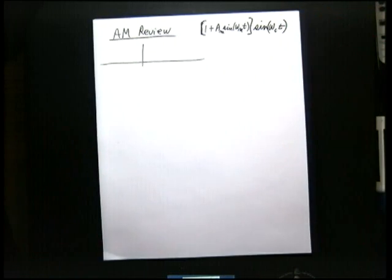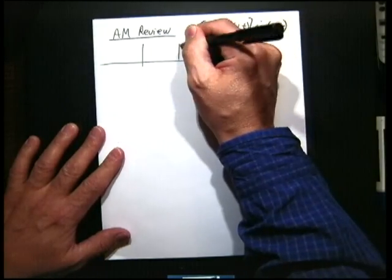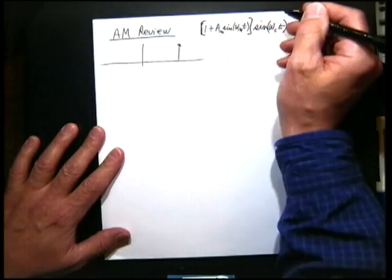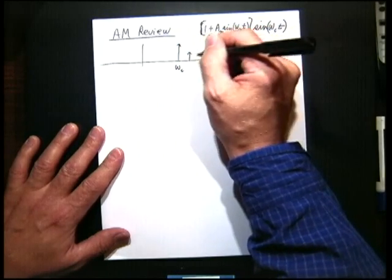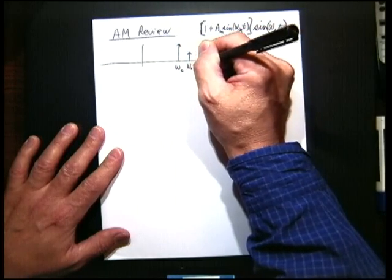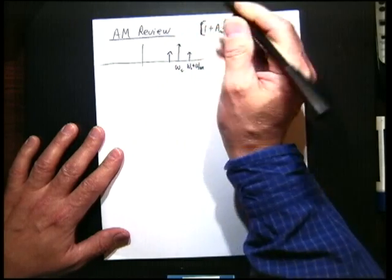And I'm not going to use any phases here. And the general result was that we had a carrier frequency, omega sub c, and then we would get side bands. So this would be at omega c plus omega sub m, and then omega c minus omega sub m.